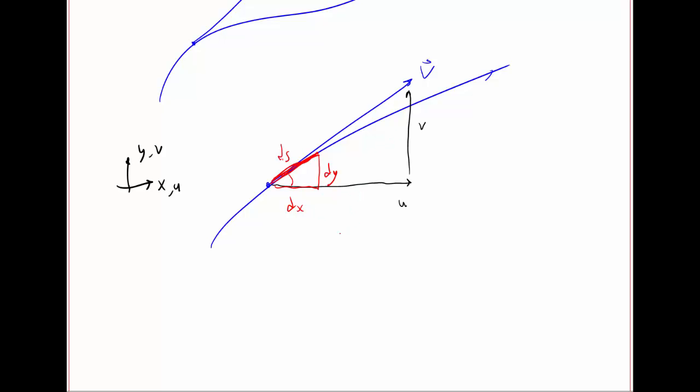They have the same angle here. And therefore, dy/dx, the ratio of this vertical height to the horizontal height along a streamline, is equal to v over u.